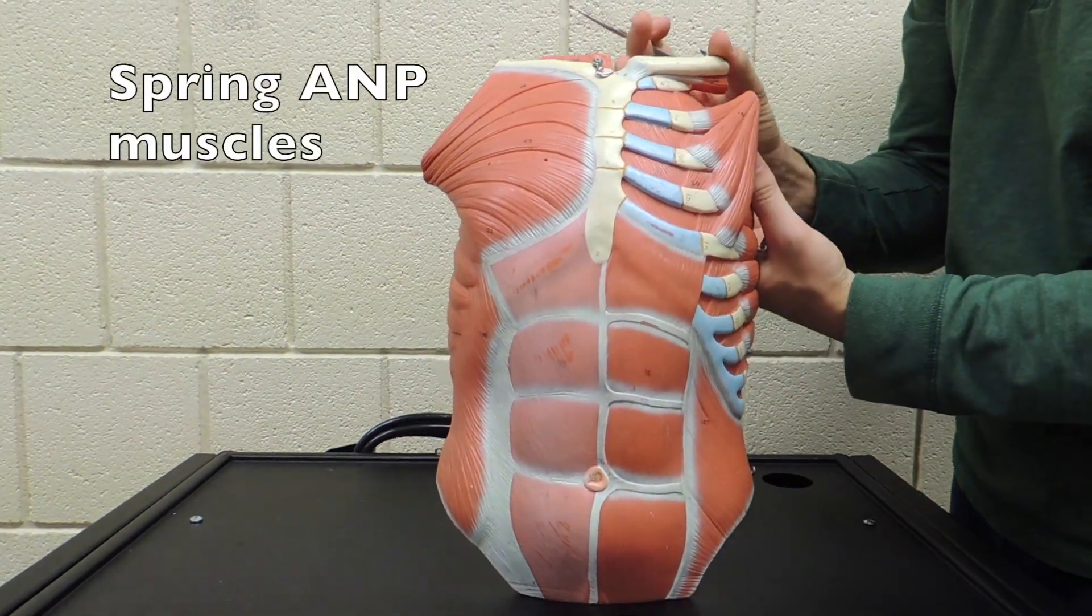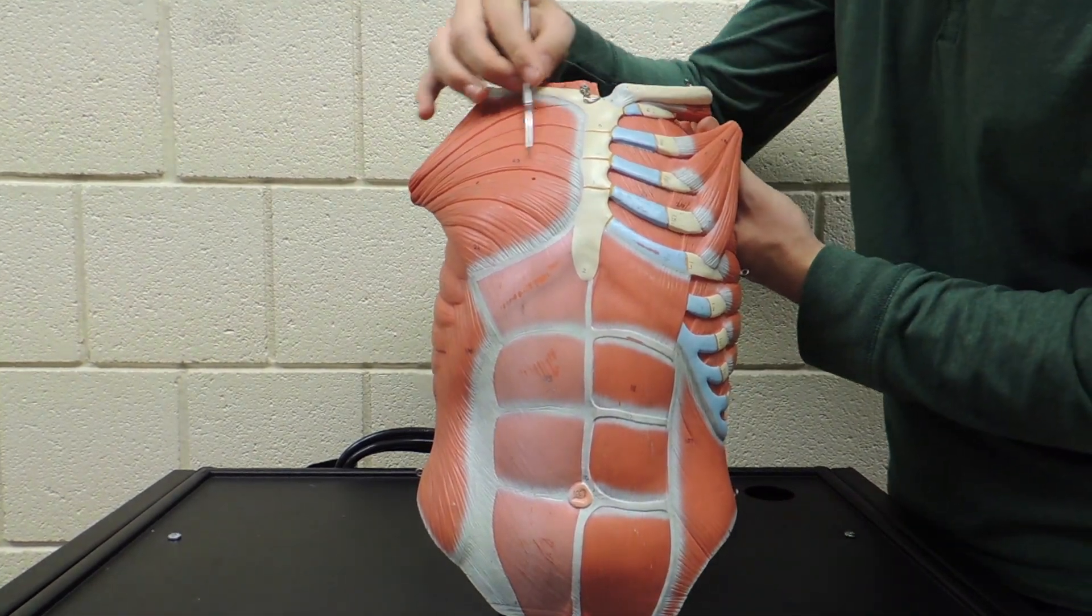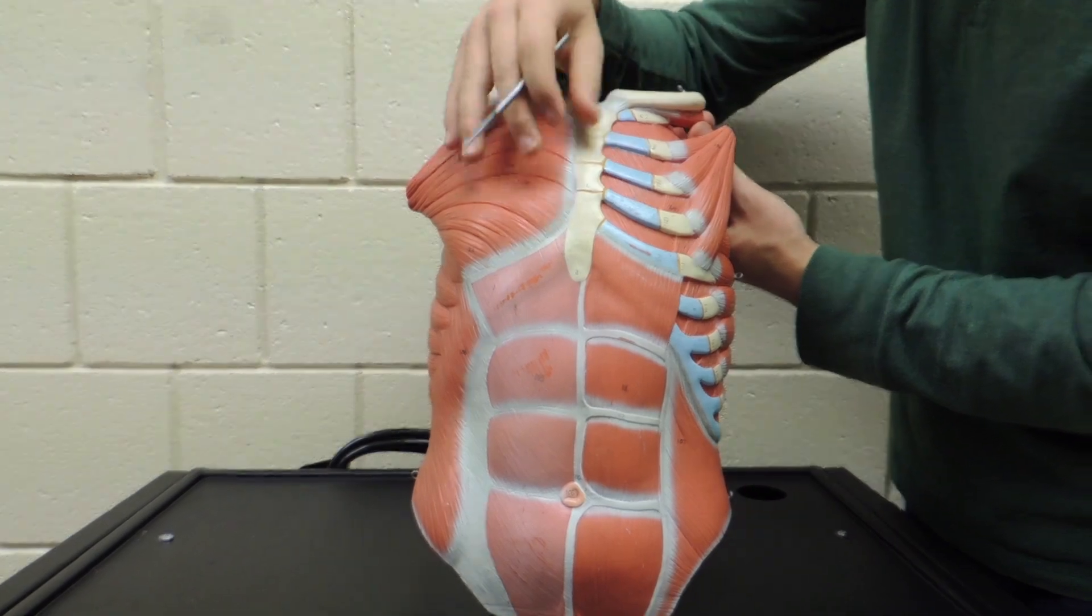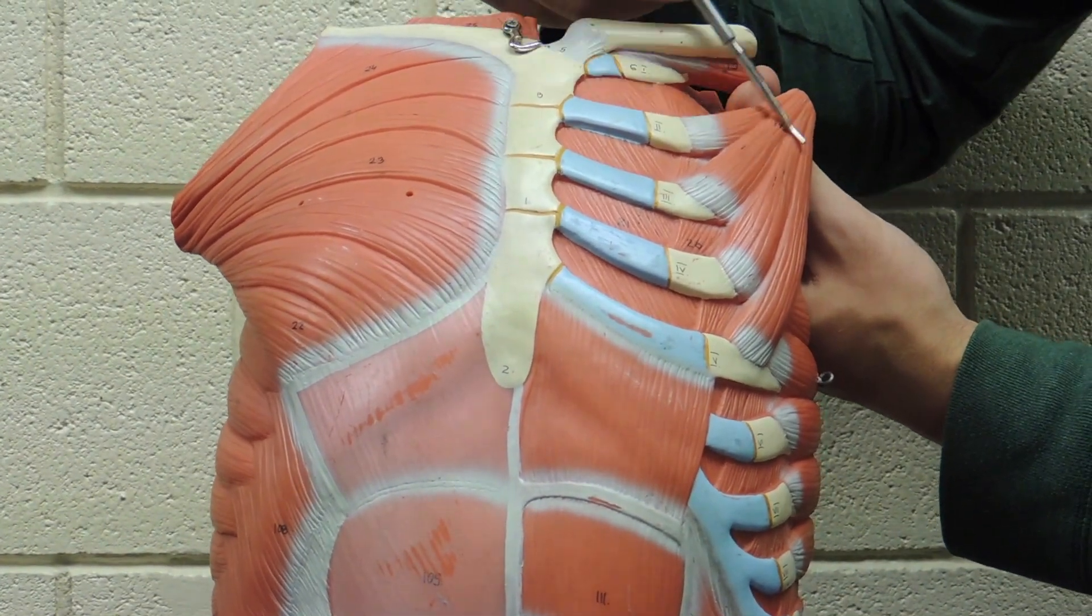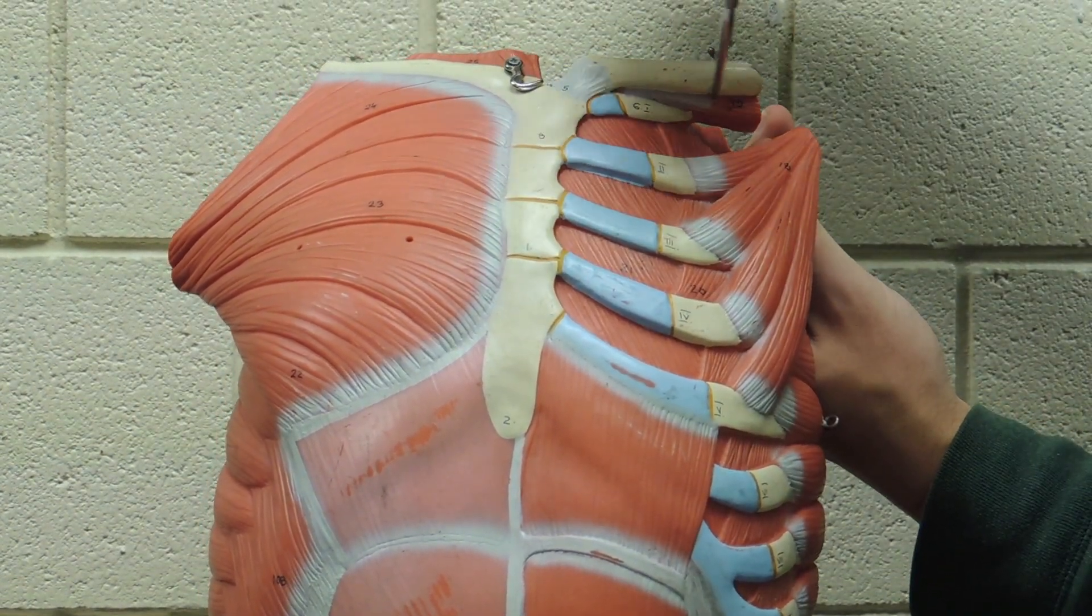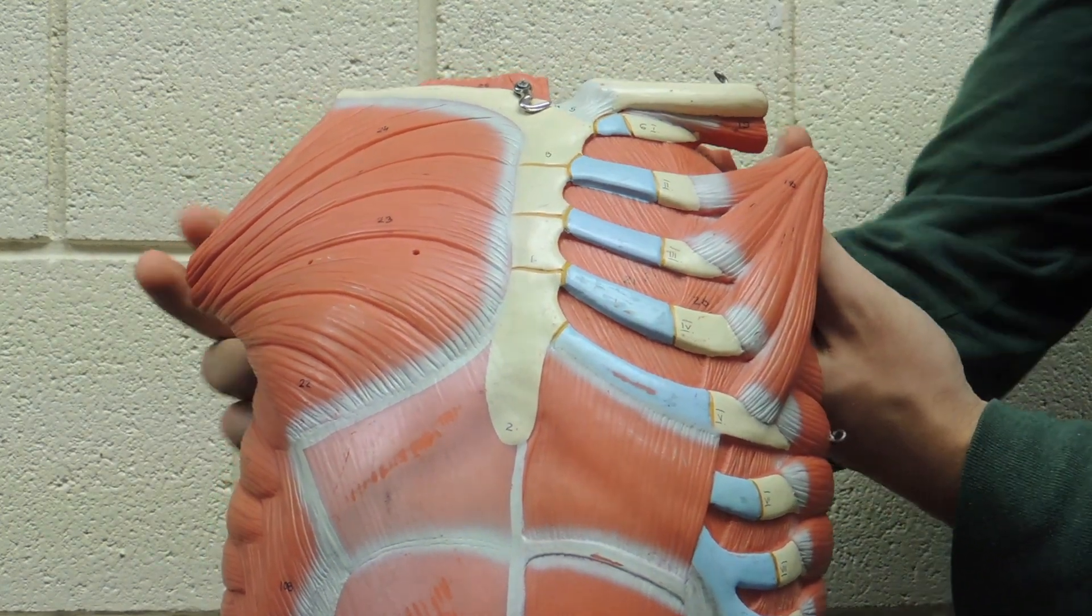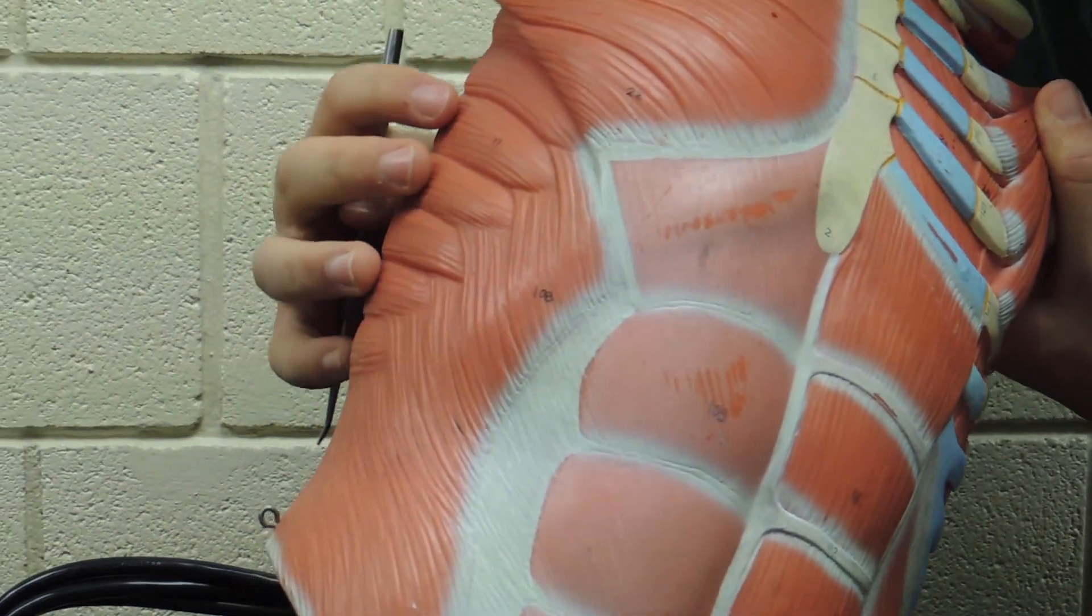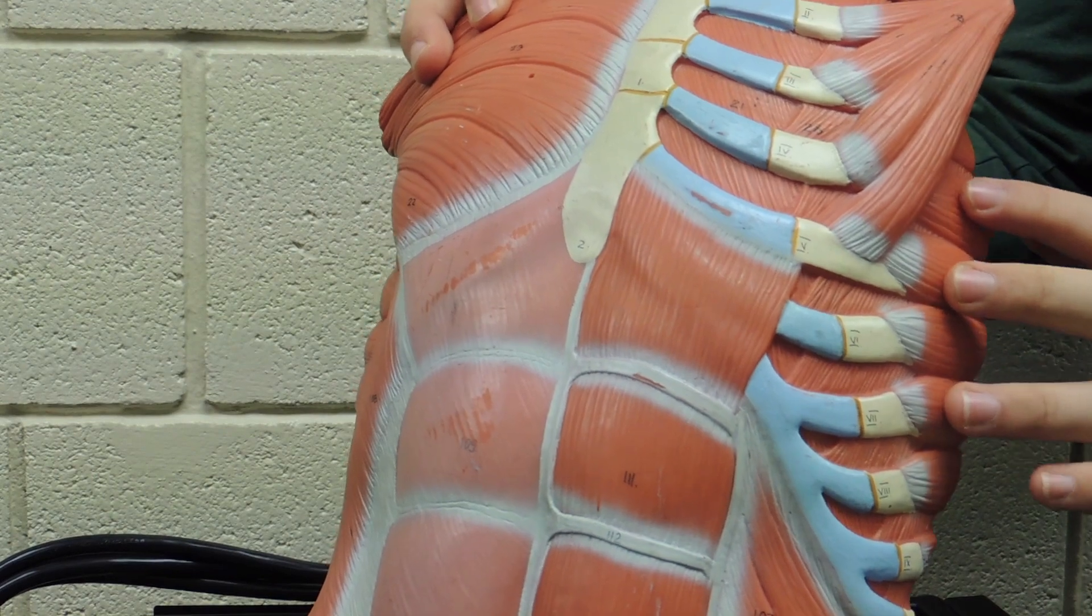These next muscles are the portion for the spring semester. On the superficial side you have your pectoralis major, deep to that right here you have your pectoralis minor. Under the clavicle, this small muscle, you have your subclavius, and on the sides right here the finger-like muscles on both sides are your serratus anterior.